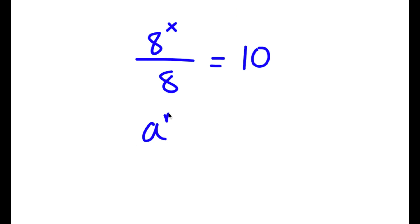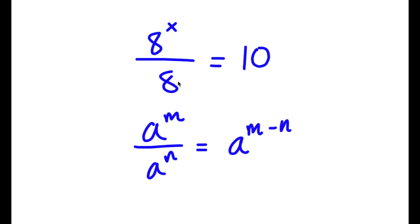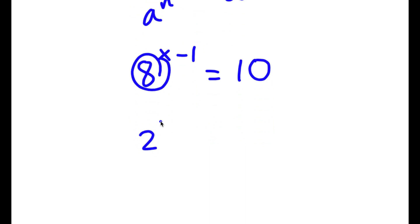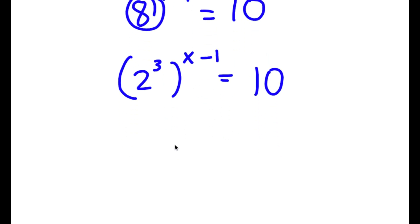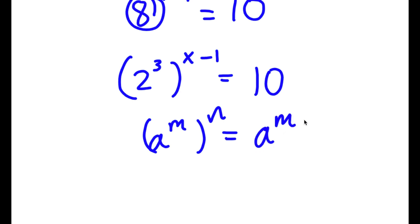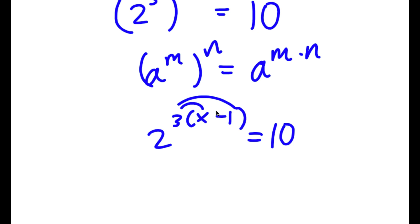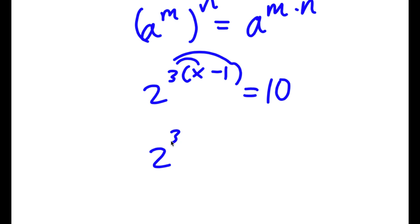Using the rule that a to the power of m over a to the power of n equals a to the power of m minus n, and since 8 is 8 to the power of 1, I get 8 to the power of x minus 1 is equal to 10. Rewriting 8 as 2 to the power of 3, I have 2 to the power of 3 to the power of x minus 1 equals 10. Using the power-of-a-power rule, this becomes 2 to the power of 3 times x minus 1, and distributing the 3 gives 2 to the power of 3x minus 3 is equal to 10.